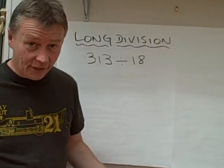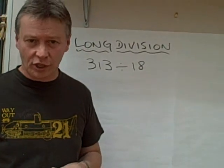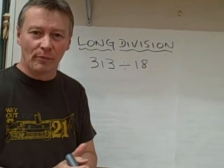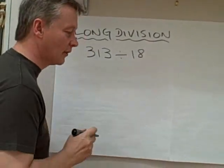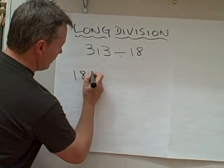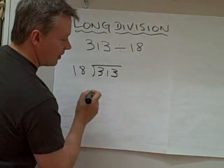There's two ways of doing it, one of which is the formal method and the other is a method that some people use which is called chunking. It's quite a good way of doing things, but firstly I'm going to do the formal method because that's the one that I was taught. So what we say is 18 into 313.